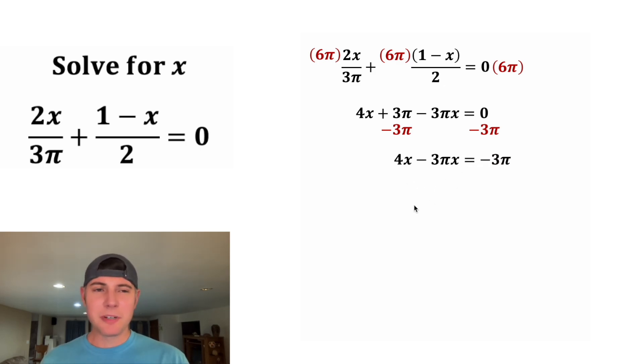Now on the left-hand side, every term contains an x. Let's factor out that x. When we factor an x out of 4x, we're left with 4. And then we can bring down the subtraction.